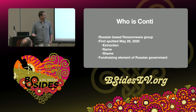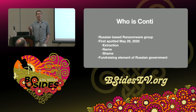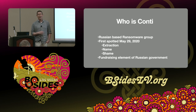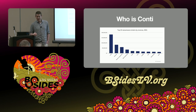Conti is a Russian ransomware group, first spotted in May 2020. They do data exfiltration first, then name and shame the company — threatening to sell data on the dark web if they don't pay a ransom. They are a fundraising arm for the Russian government, and it's not a small business. Conti was — past tense — the leader in ransomware: $180 million in 2021. That's not chump change for a criminal organization.